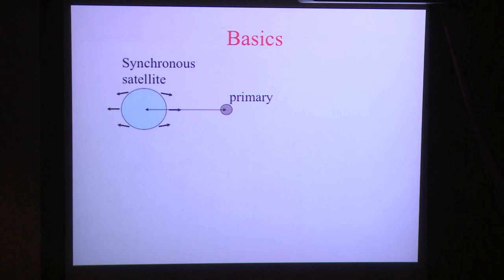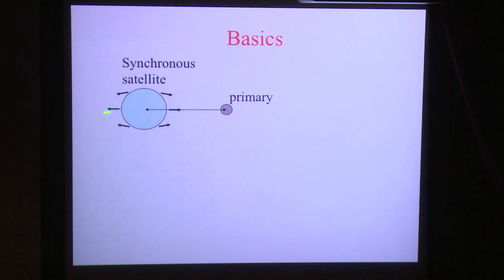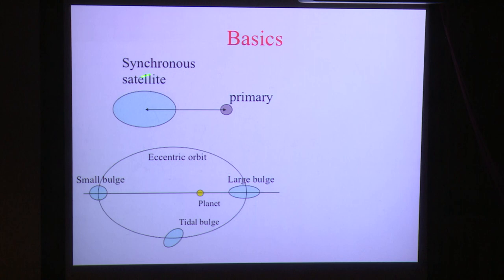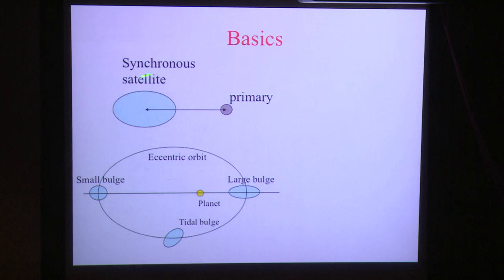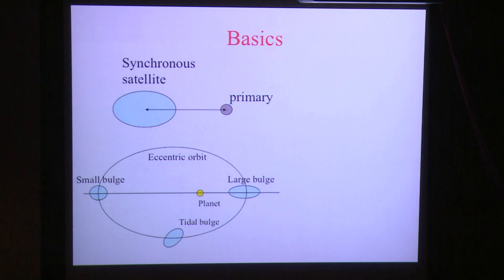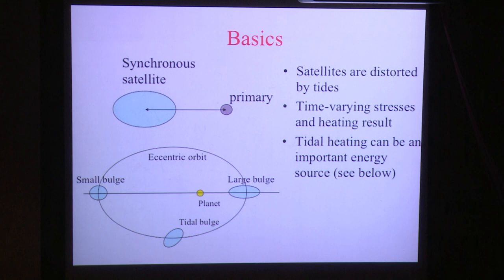Now let me talk about tides. The basic picture is that you have a satellite sitting next to a massive body. Because the satellite has some finite radius, the material on one side experiences a different acceleration than material on the other side — so it gets distorted and develops a tidal bulge. Furthermore, if the orbit is eccentric, the bulge gets bigger and smaller over the course of a single orbit. If there's any friction in the system, some of that mechanical work gets converted into thermal energy. This is why synchronous satellites in eccentric orbits can experience tidal heating.